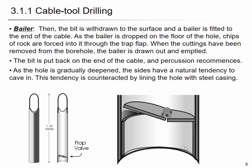The baler is a hollow cylinder with a flapper at one end — the flapper opens in one direction when pushed, then closes by itself with a spring inside, allowing you to take out the chipped rocks. When cuttings are removed from the borehole, the baler is drawn out and emptied, then the bit is put back on the cable and percussion recommences. As the hole gets deeper, the sides tend to cave in; this is counteracted by lining the hole with steel casing.